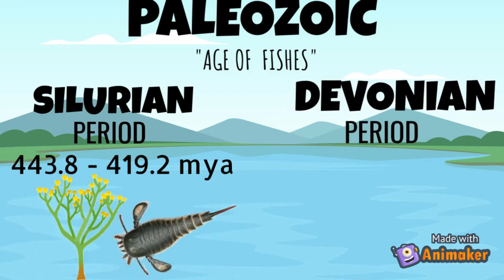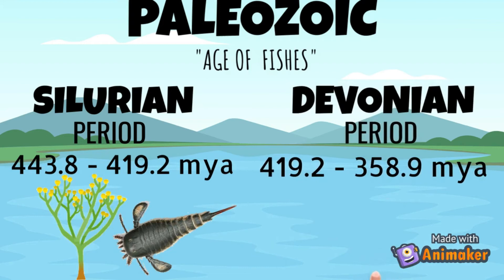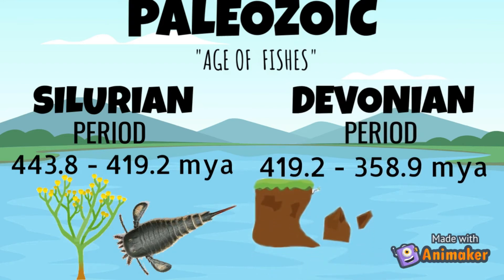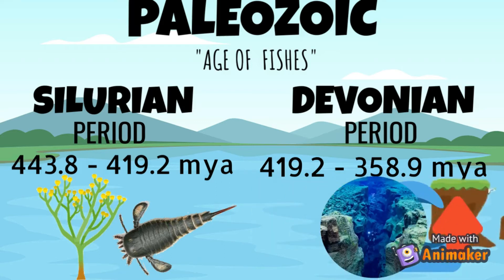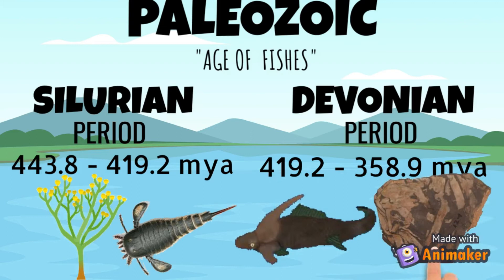The fourth one is the Devonian period, which was 419.2 to 358.9 million years ago. The rapid erosion of the Earth's mountains contributed large amounts of sediment to lowlands and shallow ocean basins, and the sea levels were high with much of western North America underwater. The Marina Laspis and Stasiaphyton lived in this period.